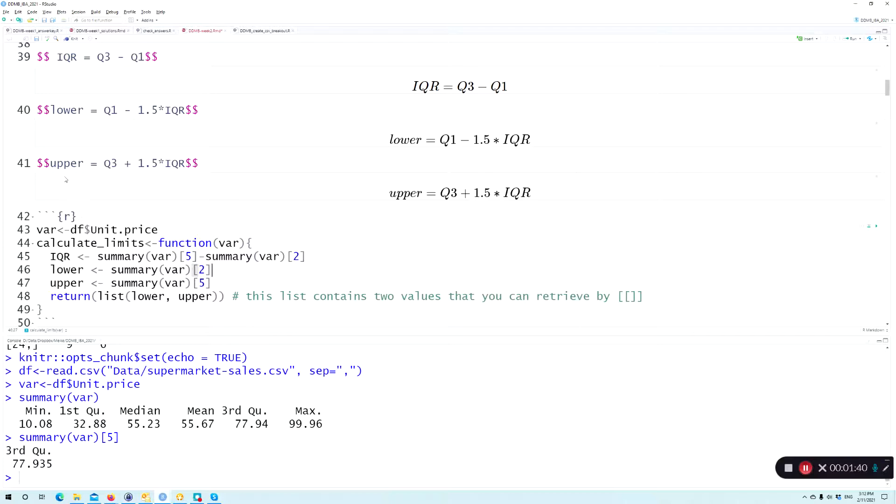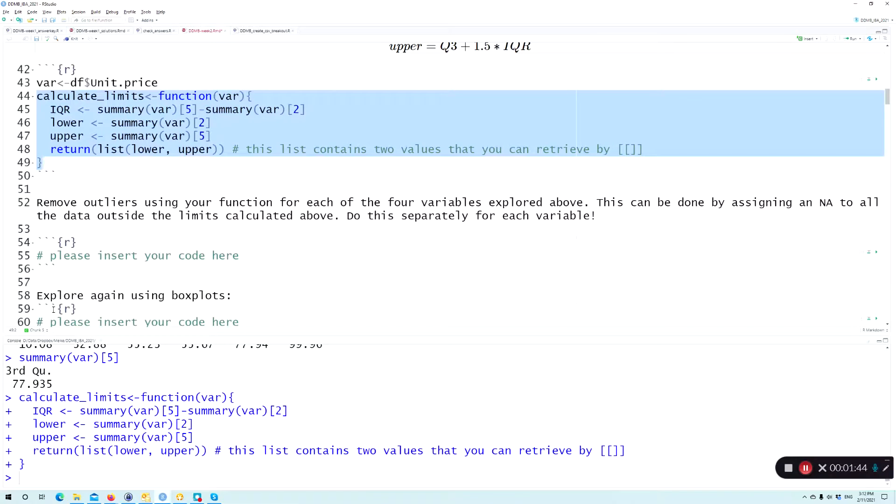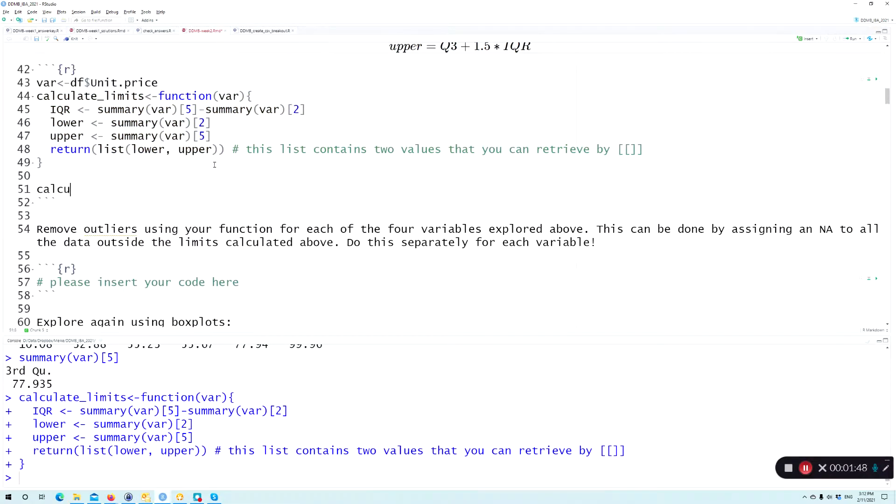Okay, so if I'm going to run this function now, I will have this function in my environment. If I now say calculate_limits, I can actually call my DF unit price that I already wanted to analyze before, and I'm going to get back a list.